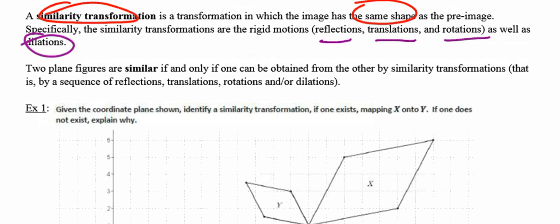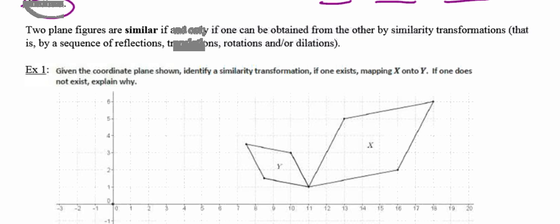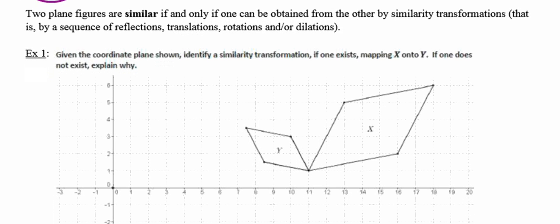We can conclude that two figures are similar if and only if we can obtain one from the other by using a sequence of similarity transformations. In other words, can we identify a series of reflections, translations, rotations, and dilations that will map one figure onto the other? If the answer is yes, then we can conclude that the two figures are similar. If the answer is no, then the two figures would not be similar.